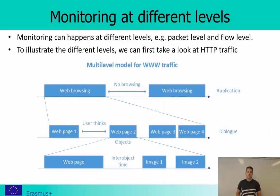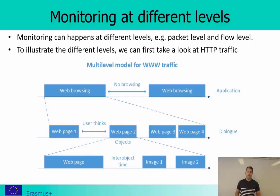When we say we want to analyze network traffic, it's important to understand what we want to analyze, because we can do this at different levels. We can do it at packet level — looking at each individual packet to see if it's malicious — or at flow level, looking at each flow to see if the flow is malicious. These are quite different approaches with different kinds of available information.